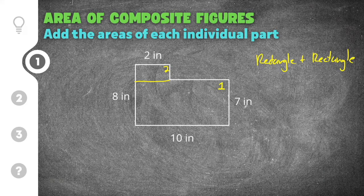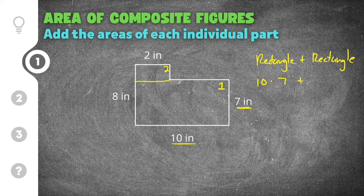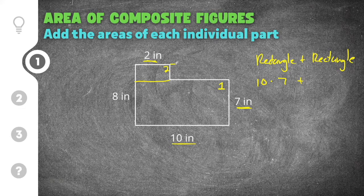This is easy for rectangle one because we already know the height and the base. So rectangle one is base times height: a base of ten times a height of seven. We add that to the area of rectangle two. For rectangle two, we know the base is two, but we don't know the height — there's no measurement given, so we have to figure that out.